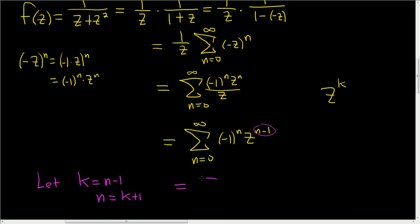So this will equal the sum, and n starts at 0. When n is 0, k is -1, so now our series will start at -1. It's still going to infinity. Then this is (-1)^n, but n = k + 1, so this is (-1)^(k+1) times z. And n - 1, well, we said that was k, so z^k.